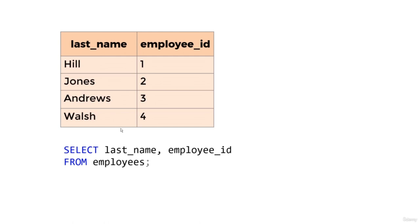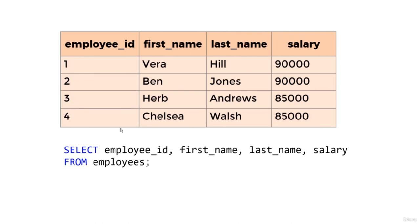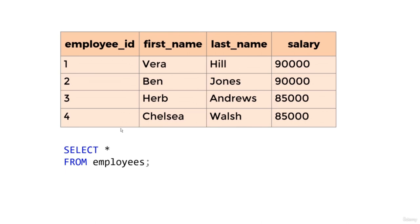To select all columns from a table, a quick way is to use SELECT asterisk — or as I like to say, SELECT star. SELECT star is a quick way to select all columns. If you are writing queries, it is okay to use SELECT star. However, when it comes to creating a view or inserting data into a table, then it is considered bad practice to use SELECT star — we'll be taking a closer look at why later on.